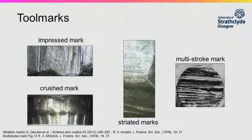The types of crimes where tool marks can be found include burglaries and car theft. Marks are also created when a firearm is fired due to the action of the firing mechanism. These can be found on the cartridge or projectile involved.